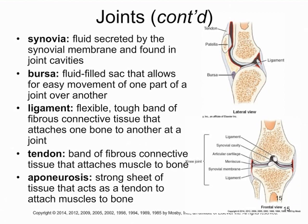We also have ligaments and tendons — they are different. Ligaments connect bone to bone; they are bands of tough connective tissue. For example, in the knee, a ligament connects the patella to the tibia. A tendon, by contrast, connects muscle to bone. An aponeurosis is a specific type of tissue that acts as a tendon to attach muscle to bone.